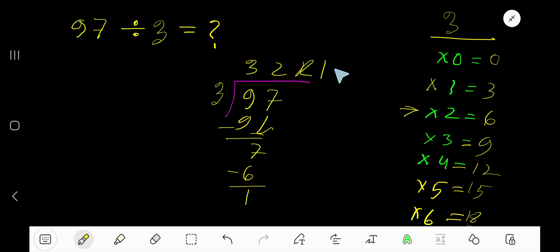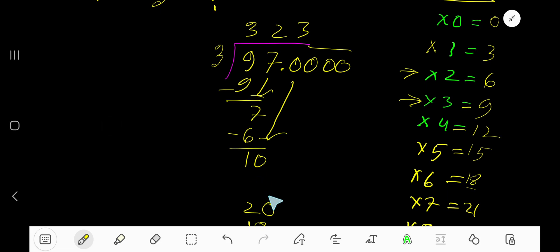But if we want to write our answer in decimal form, just convert this whole number into a decimal number. Bring down the first 0. 3 goes into 10 how many times? 3 times. 3 times 3 is 9, subtract to get 1. Before bringing down the next 0, the decimal must come to the quotient directly above. Now bring down this second 0.